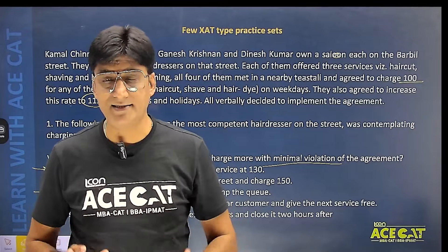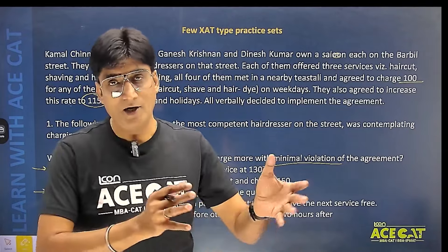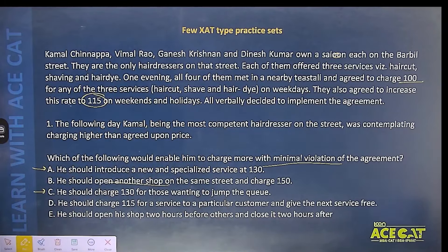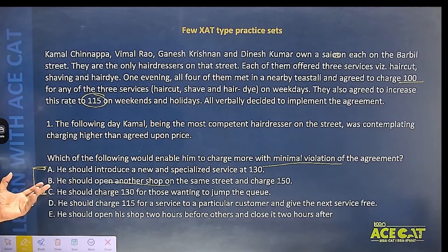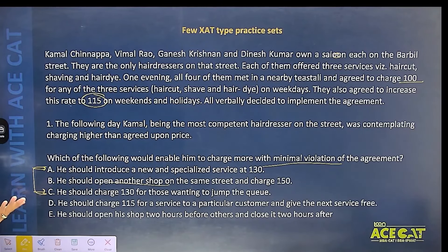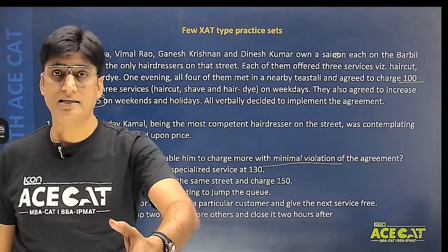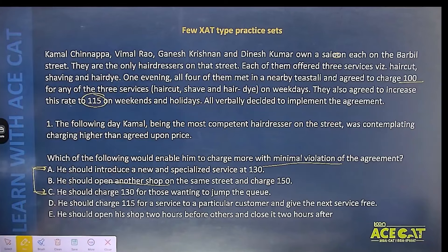Comparing options A and C: option C — charging extra to jump the queue — may dissatisfy other customers. But option A — providing a specialized service and charging extra for it — means customers who want something specialized will be happy, and this is the least violation of the agreement. So the answer is option A: introduce a new specialized service at 130.